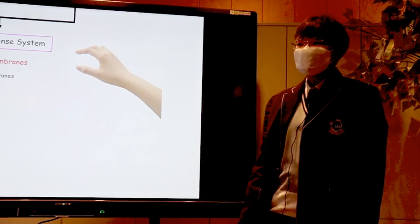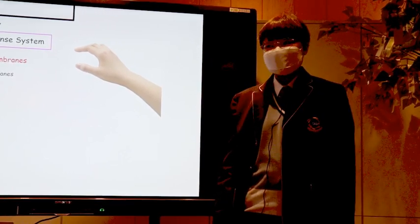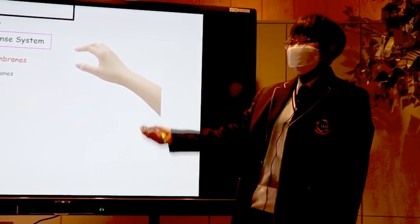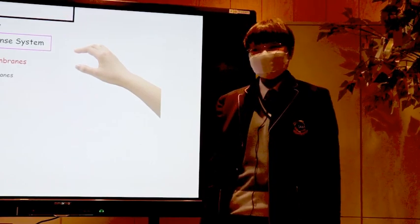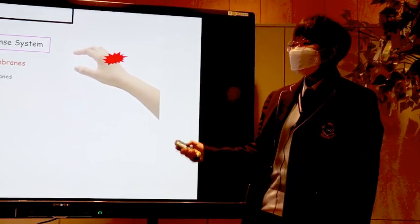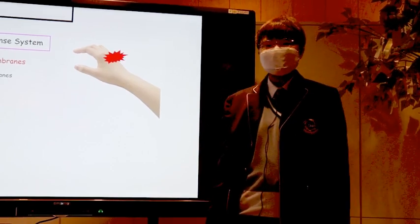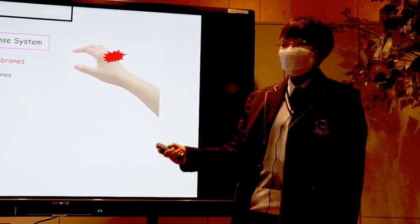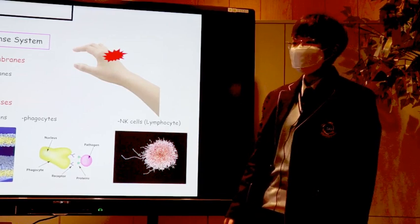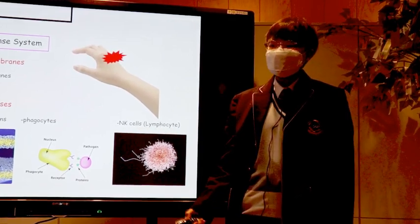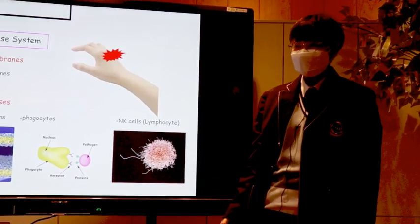First, let's talk about the innate defense system. External membranes are things like skin and mucous membranes. If we get a wound, a pathogen can get into our body. That's why we have internal defenses too, which consist of antimicrobial proteins and phagocytes.